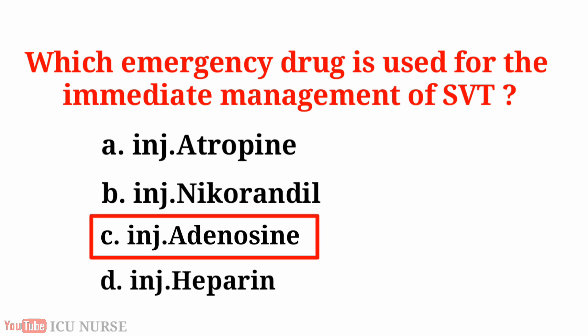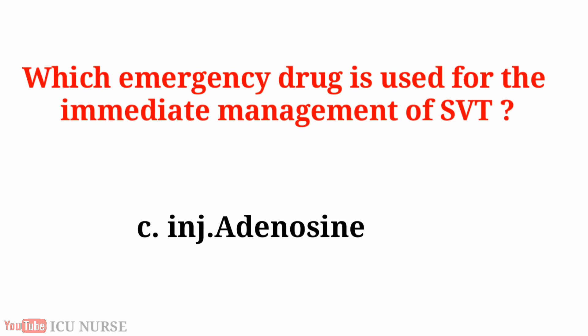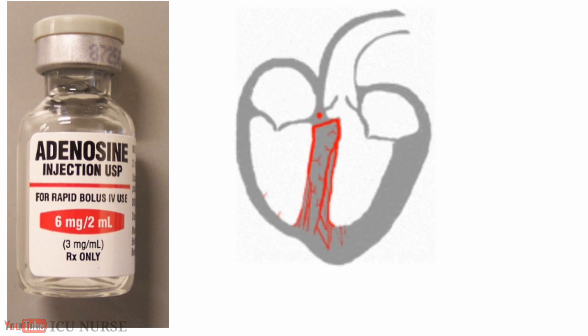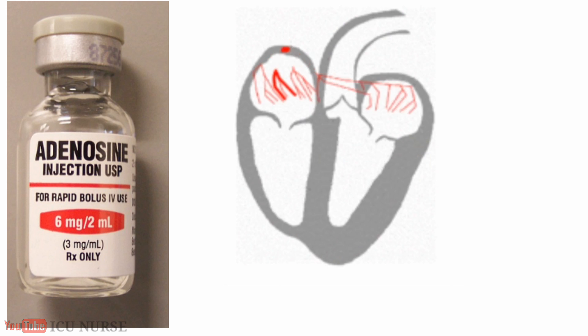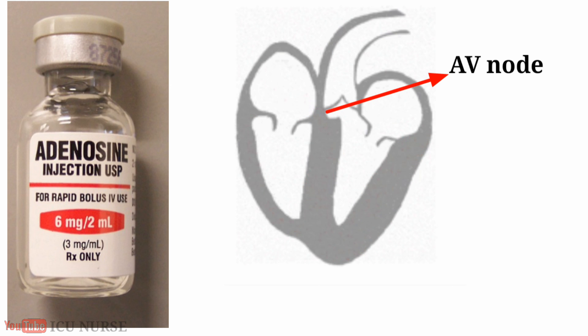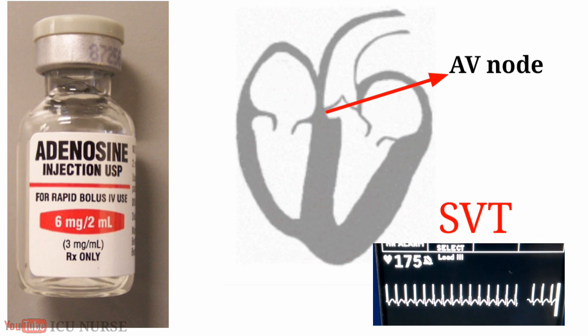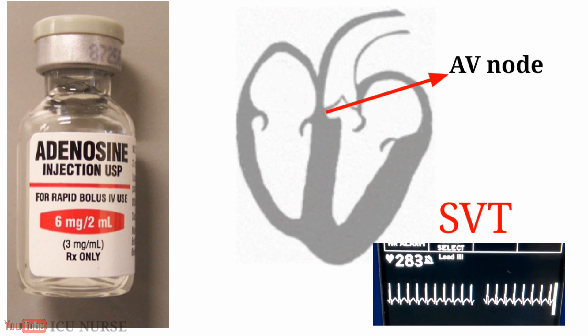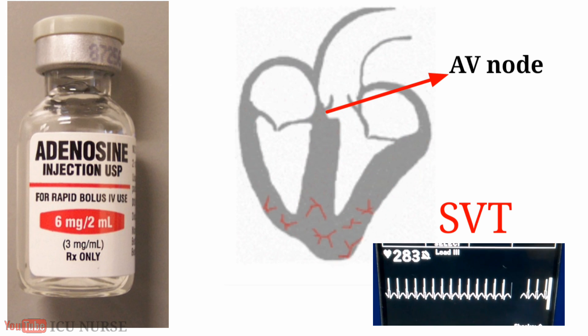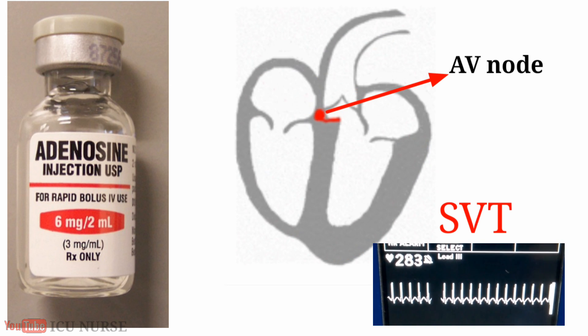The emergency drug used for the immediate management of SVT is injection adenosine. It slows conduction time through the AV node, can interrupt re-entry pathways through the AV node, and can restore normal sinus rhythm in patients with paroxysmal supraventricular tachycardia, including PSVT associated with Wolff-Parkinson-White syndrome.